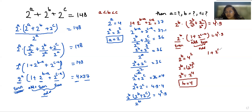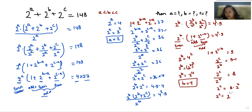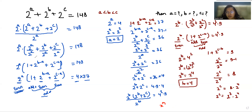Now 1 + 2^(c-b) = 9, so 2^(c-b) = 8. Thus 2^c / 2^b = 8, and with b = 4: 2^c = 8 × 2^4. Writing 8 as 2^3 and applying the exponent rule x^m × x^n = x^(m+n): 2^c = 2^3 × 2^4 = 2^(3+4) = 2^7, so c = 7.